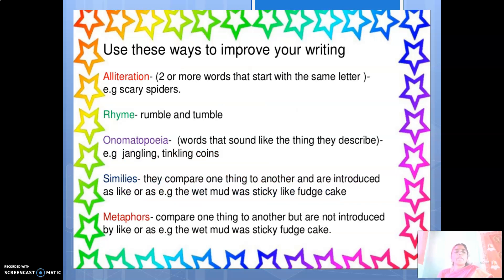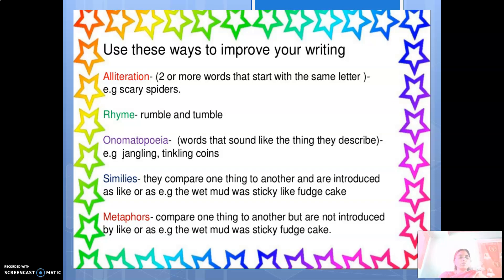Use these ways to improve your writing — grammatical terms such as alliteration, rhyme, onomatopoeia, similes, and metaphors. Alliteration is when two or more words start with the same letter. For example, in school when introducing yourself, a girl named Sharmila could say 'Smiling Sharmila' — both start with 'S'. Another example: 'scary spiders' — both words start with 'S'. Next is rhyme — when reading or experiencing a poem, you make use of rhyming words, like rumble and tumble.